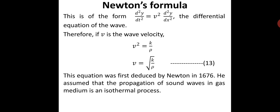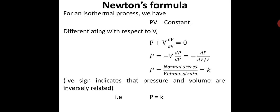This equation was first deduced by Newton in 1676. According to Newton, sound waves propagate as compressions and rarefactions. During compression, heat is produced; during rarefaction, cold is produced. The heat and cold are communicated to the surrounding medium, so the temperature of the gas remains constant. Therefore, Newton assumed the propagation of sound waves in a gas medium to be an isothermal process. For an isothermal process, PV equals constant.